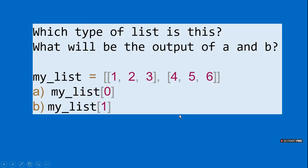The second question is: which type of list is this? What will be the output of A and B? There are two square brackets and within them there are two lists. Which type of list is this, and what will be the output of my_list[0] and my_list[1]?